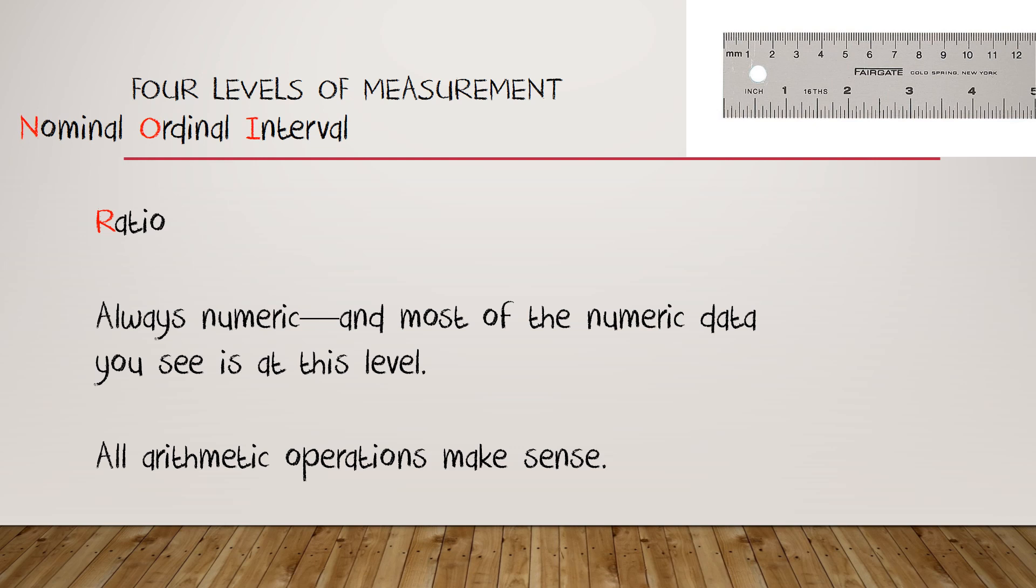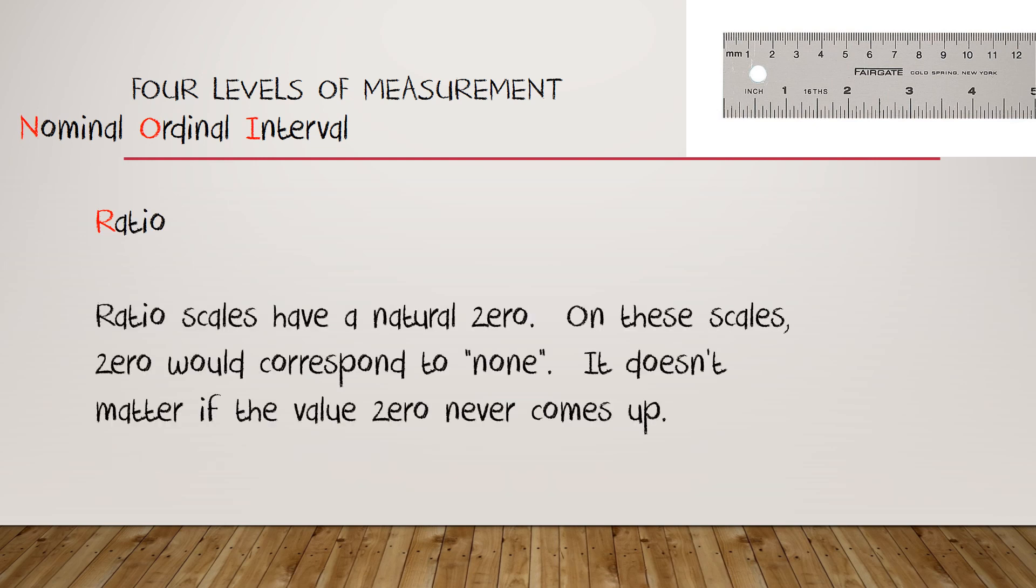In particular, it makes sense to say that four inches is twice as long as two inches, or for that matter, that four centimeters is twice as long as two centimeters. Ratio scales all have a natural zero, and zero corresponds to the idea of none at all. It doesn't matter if the value zero could never actually come up. For example, if I asked people how many people were in their family, nobody would ever say zero. And yet, we understand what zero people would mean. And it's perfectly sensible to say that a family of size six is twice as big as a family of size three.